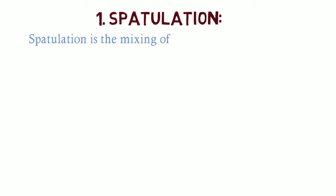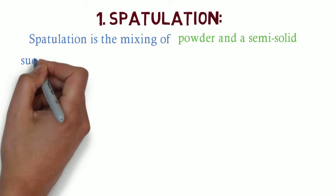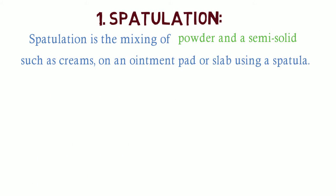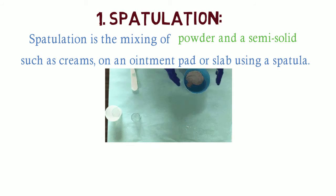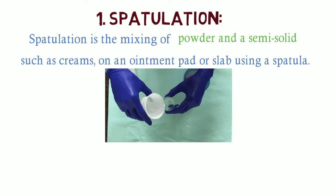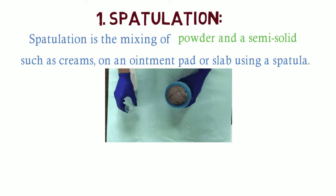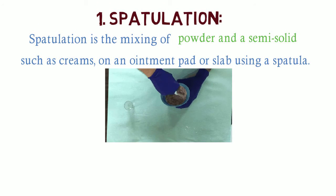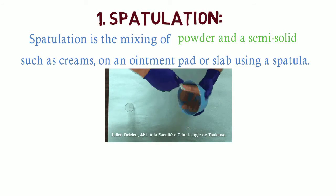The first method is spatulation. Spatulation is the mixing of powder and a semi-solid such as creams on an ointment pad or slab using a spatula. As we use a spatula for this mixing process, the name comes as spatulation.